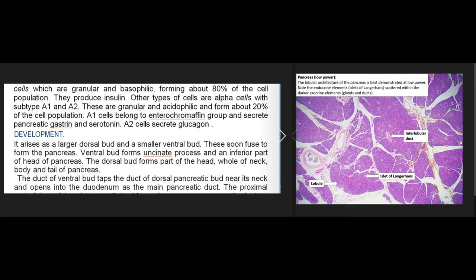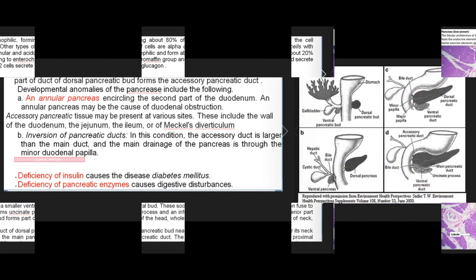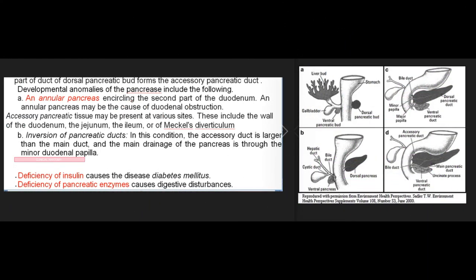Development: the pancreas arises as a larger dorsal bud and a smaller ventral bud, which fuse to form the pancreas. The ventral bud forms the uncinate process and the inferior part of the head of the pancreas. The dorsal bud forms part of the head, whole of the neck, body, and tail. The duct of the ventral bud taps the duct of the dorsal pancreatic bud near its neck and opens into the duodenum as the main pancreatic duct. The proximal part of the duct of the dorsal bud forms the accessory pancreatic duct.